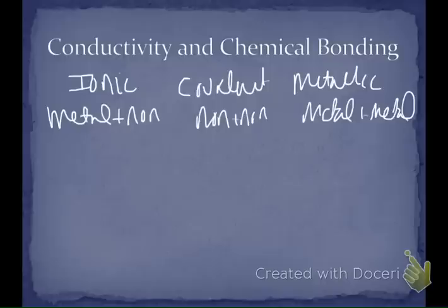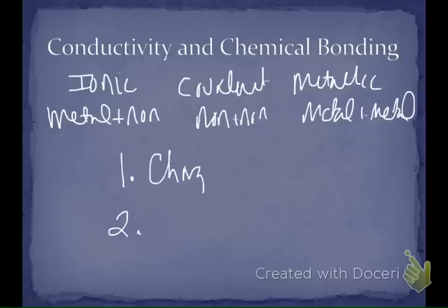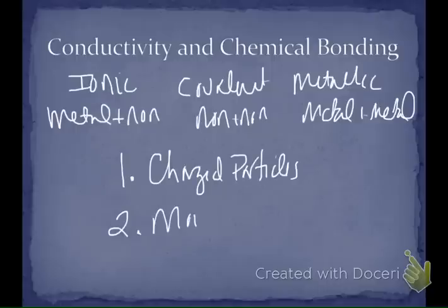Ionic substances conduct under certain circumstances. Covalent substances never conduct, and metallic substances will always conduct. The thing to remember about conductivity is you have to have two things present: you must have charged particles, and those charged particles have to be able to move. If they can't move, you can't conduct. That's going to explain the conductivity of each one of these substances.